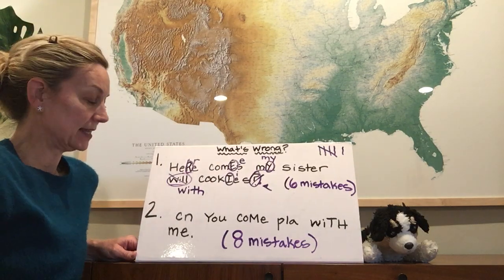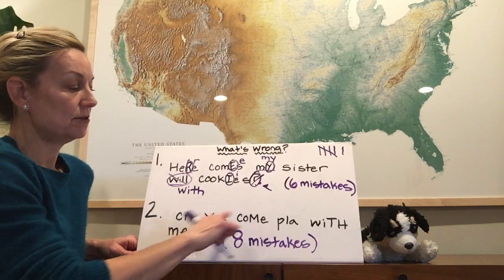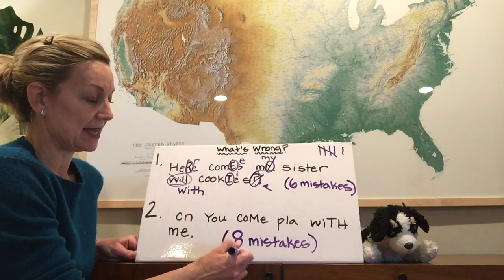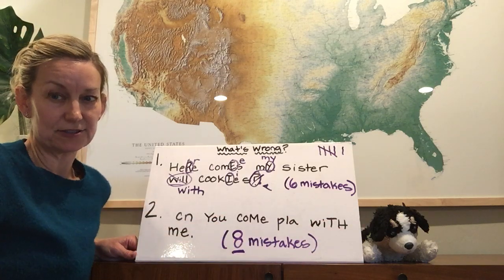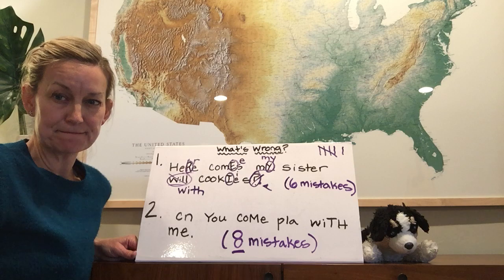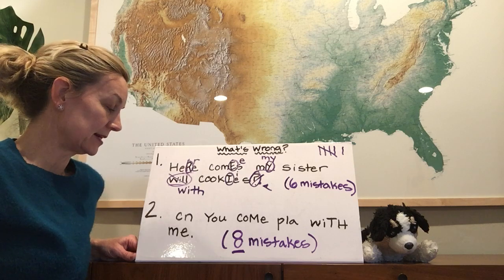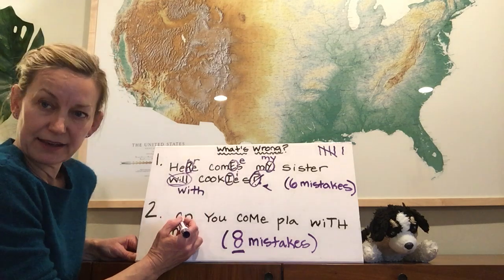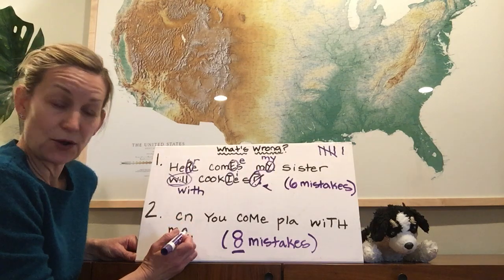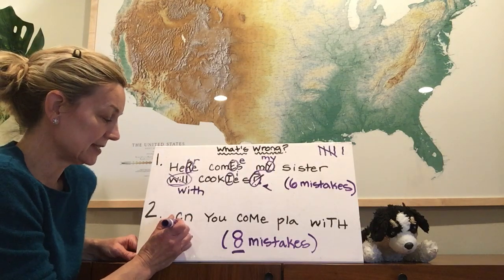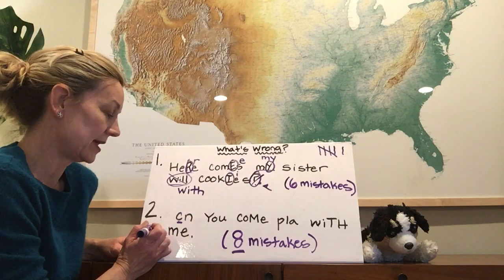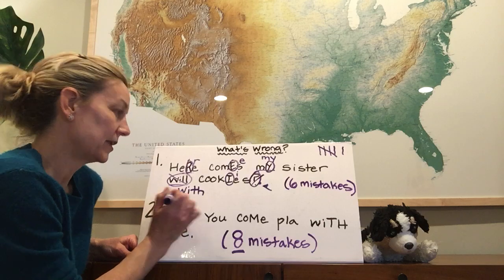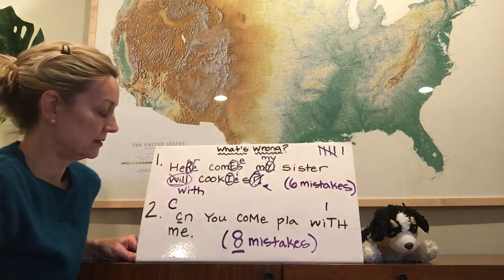Let's see, it reads: can you come play with me? Oh my goodness — eight mistakes in here. Do you see any? I see the first one. As we know, the beginning of our sentence should have an uppercase. I see a lowercase right there, so I'm going to go ahead and correct that with an uppercase. There's one.